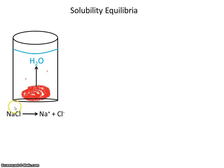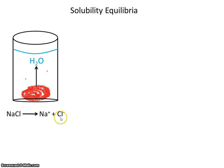So what we have is sodium chloride as a solid — that's this stuff here at the bottom — dissolving and making sodium ions and chloride ions, and we would see them floating around here in the picture.